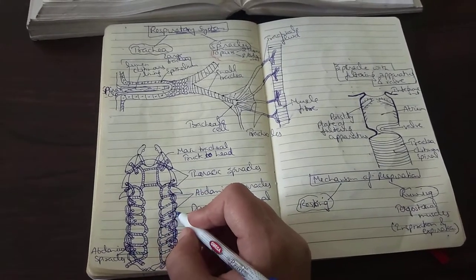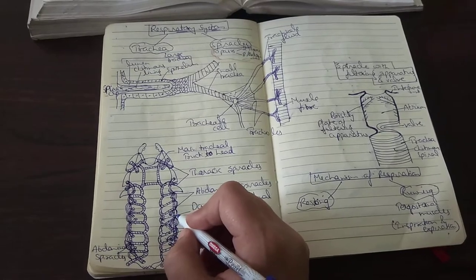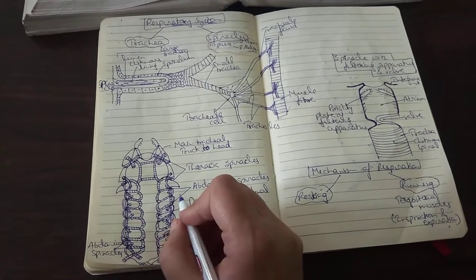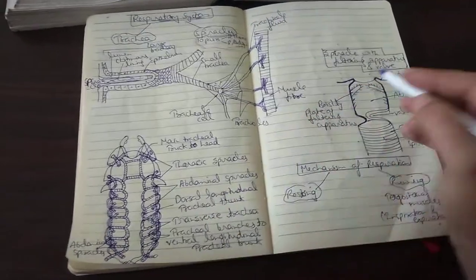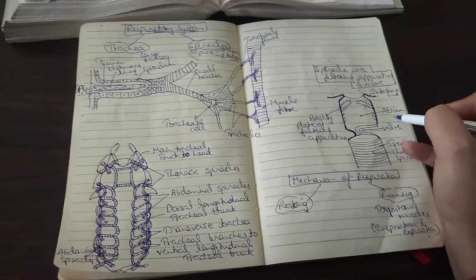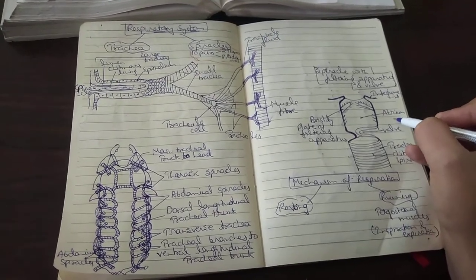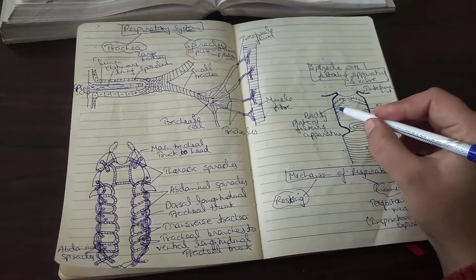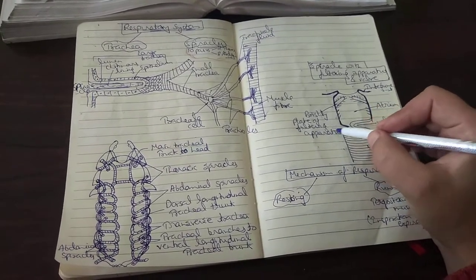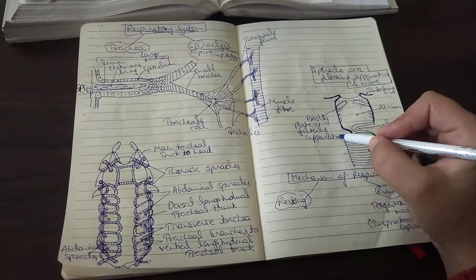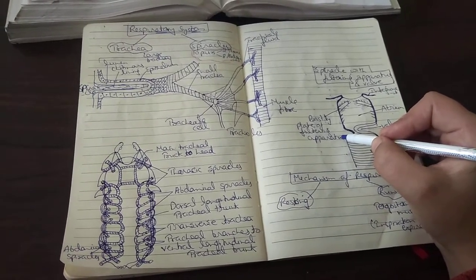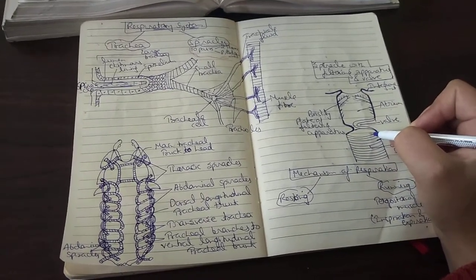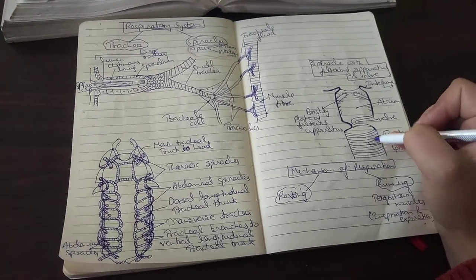Abdominal spiracles lie in the soft membrane between the terga and the sterna in the anterior eight segments of the abdomen. Each spiracle is bounded by a sclerite called the peritreme and it leads into a cavity referred to as the atrium. The atrium has a closing device or valve and also has a bristly plate of filtering apparatus. It basically keeps dust particles, parasites and water from entering into the respiratory tract of the cockroach. From the atrium arises the main trachea.